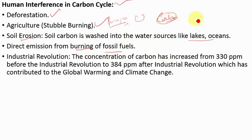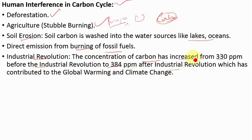Carbon is increasing beyond sustainable limits, and the entire process does not remain in an equilibrium state. After the industrial revolution, the concentration of carbon in the atmosphere has increased from 330 parts per million before the industrial revolution to 384 parts per million after industrialization. You can see to what extent we have contributed to carbon in the atmosphere — which is a clear interference in the carbon cycle, leading to global warming and climate change.